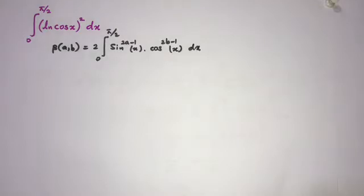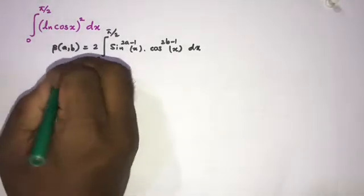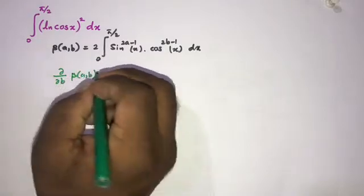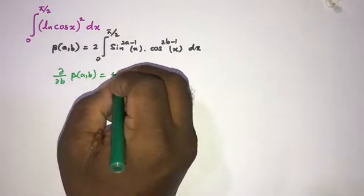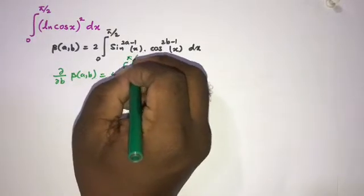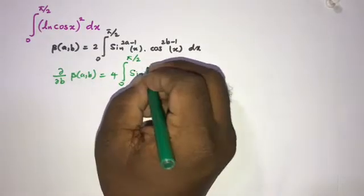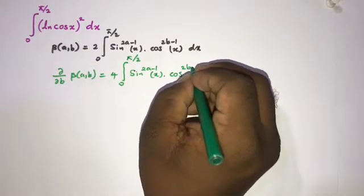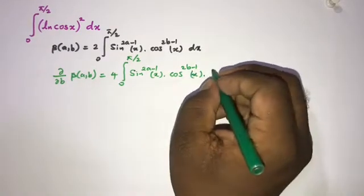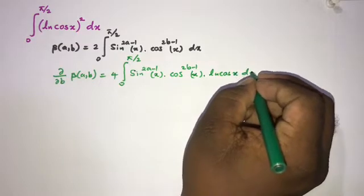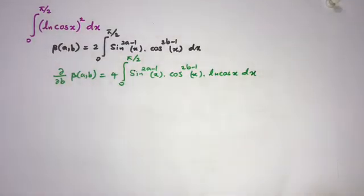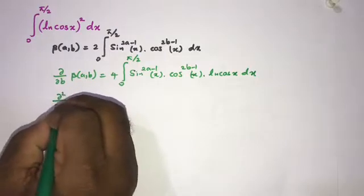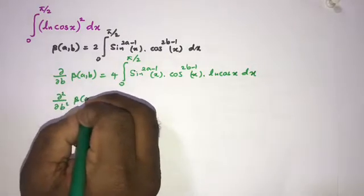If we take the partial derivative of the beta function with respect to b, we get: ∂B(a,b)/∂b = 4 times the integral from 0 to π/2 of sin^(2a−1)(x) · cos^(2b−1)(x) · ln(cos x) dx.